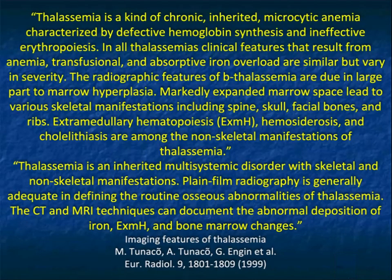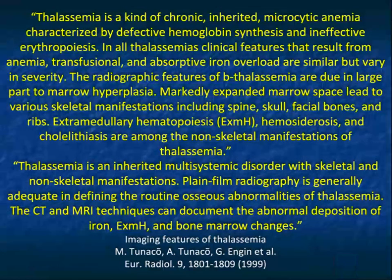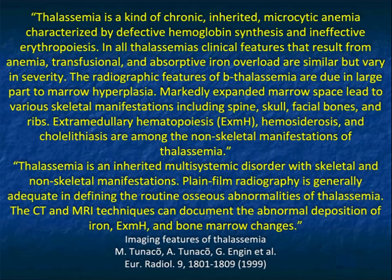A couple of points about thalassemia: it's a chronic inherited microcytic anemia characterized by defective hemoglobin synthesis and ineffective erythropoiesis. There are a number of different types. The radiological features of beta thalassemia are due in large part to marrow hyperplasia. Markedly expanded marrow space leads to various skeletal manifestations including the spine, skull, facial bones, and ribs.